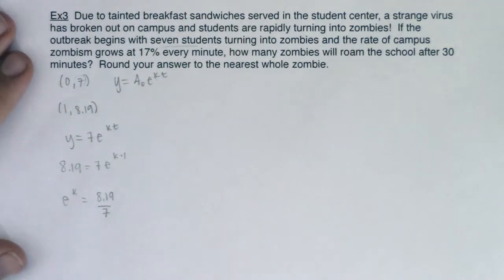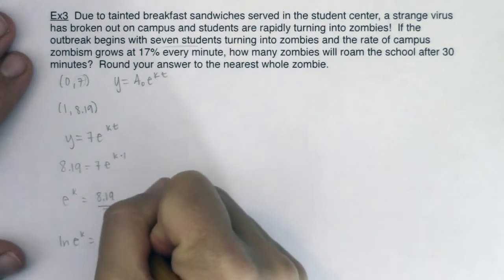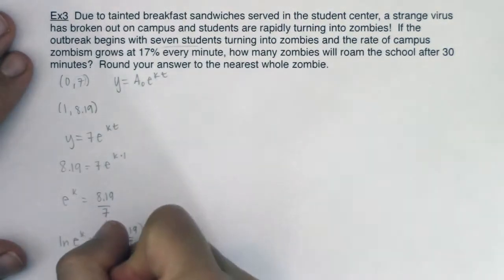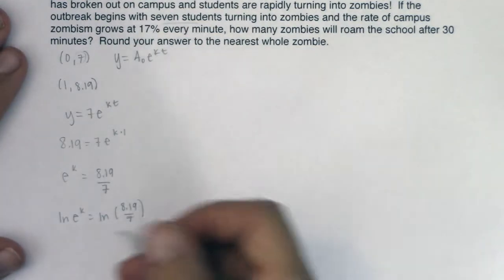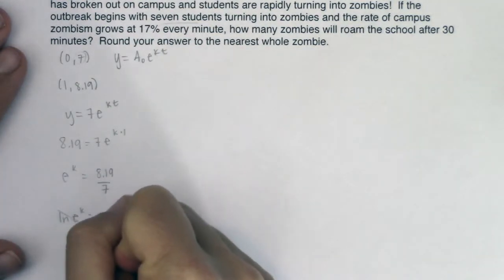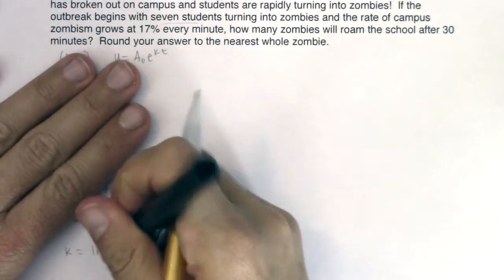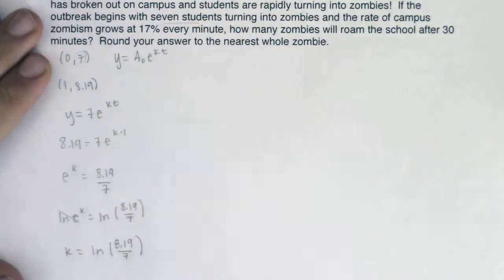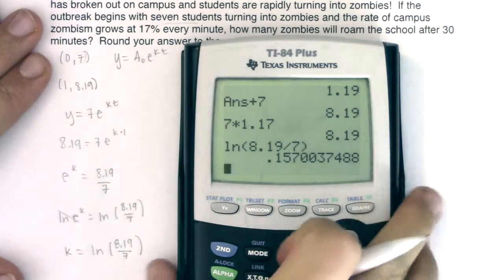Now let me go ahead and natural log both sides. All right and then I'm going to have that k is equal to whatever this number winds up being. So k will be equal to the natural log of 8.19 over 7. Let's see what that is. So that's natural log 8.19 divided by 7, it looks like my k is about 0.157.